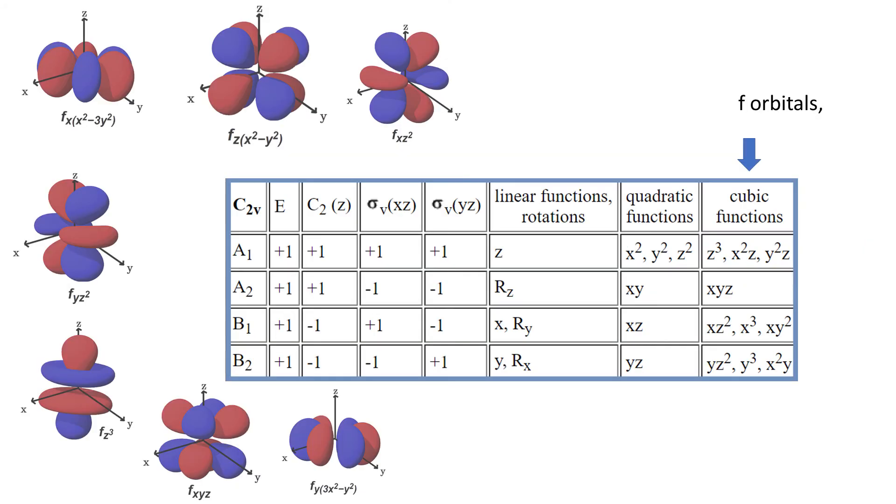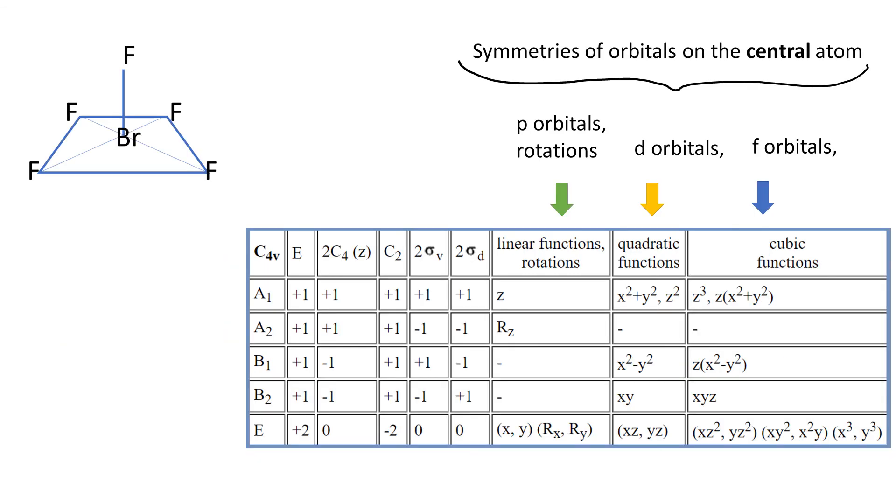Because f-orbitals have more complex functions, which translates to more complex shapes, it is not likely that you will be asked to do any manual manipulations on these orbitals. Also please notice that the last three columns refer to symmetries of orbitals on a central atom, which is in the middle of our coordinate system. We will deal with ligand orbitals differently, but that is the topic for future videos.